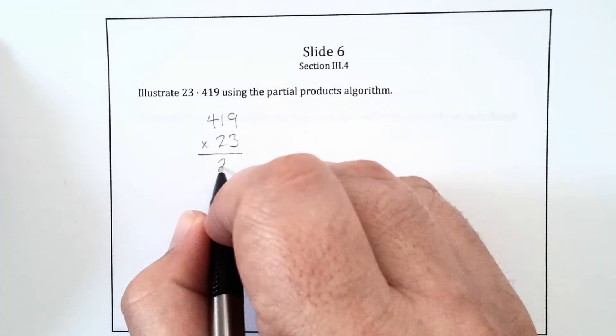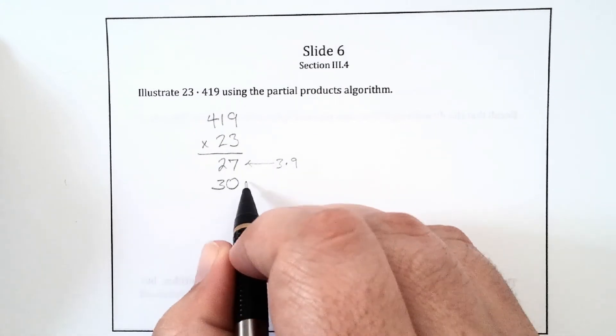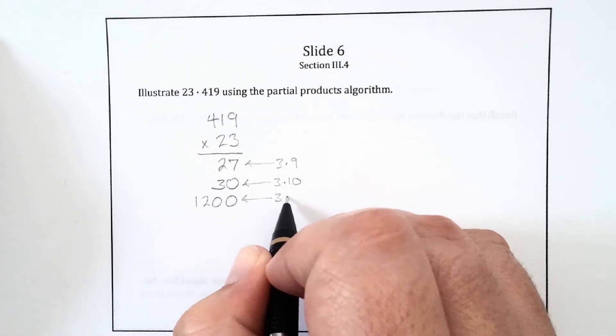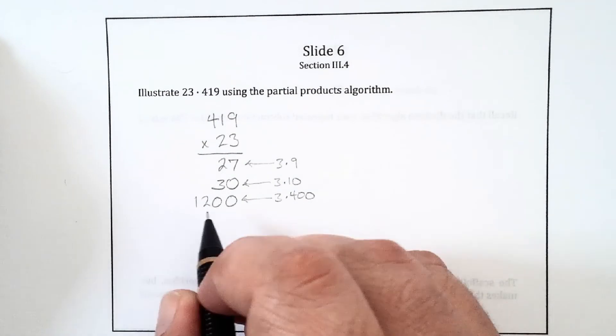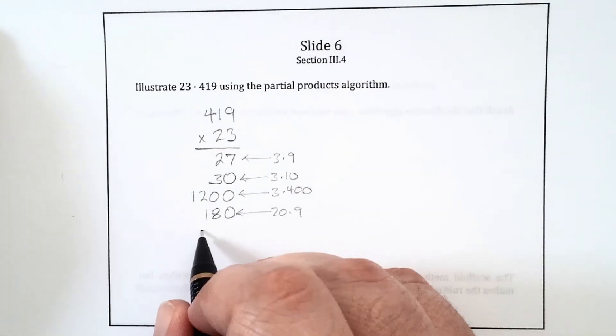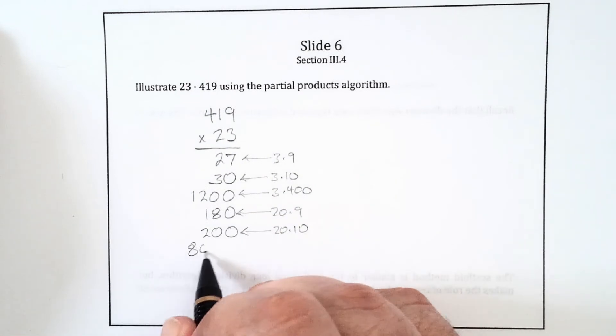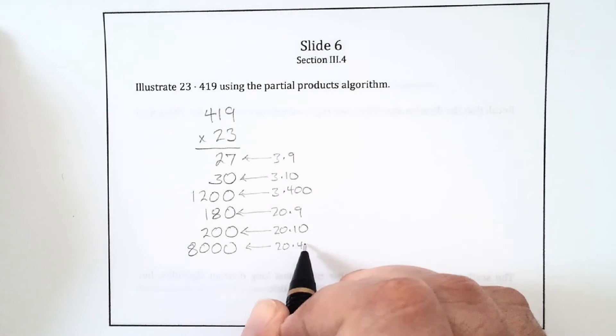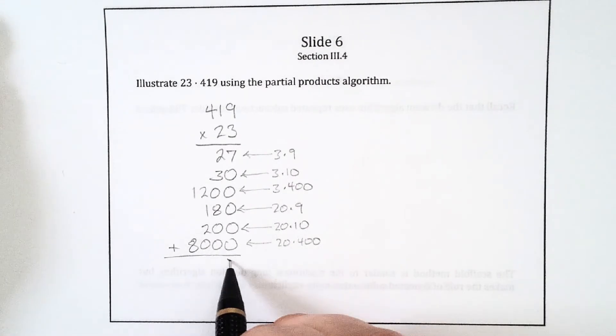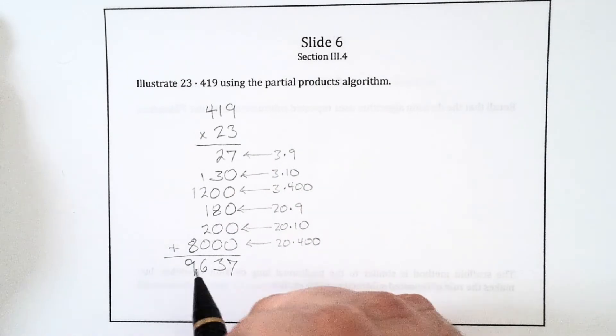3 times 9 is 27, so I just write the whole 27 down there. 3 times 10 is 30. 3 times 400 is 1,200. 20 times 9 is 180. 20 times 10 is 200. And 20 times 400 is 8,000. So you see these are the same six products I had at the bottom, now lined up vertically to make them easy to add. And we get the same result.